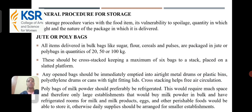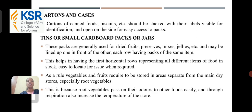General procedure for storage: The storage procedure varies based on the food item, its vulnerability to spoilage, quantity in which bought, and nature of packaging. First, jute or poly bags: items delivered in bulk bags like sugar, flour, cereals, rice, and pulses are packed in jute or poly bags in quantities of 20, 50, or 100 kg. These should be cross-stacked, keeping a maximum of 6 bags to a stack placed on a slatted platform. Cartons of canned foods, biscuits, etc. should be stacked with their labels visible for identification and open on the side for easy access to packs.